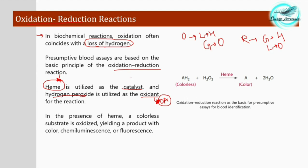Heme acts as a catalyst — a substance that alters the rate of reaction, typically increasing it, without being consumed in the reaction. If a particular stain is blood, heme will be present, and this heme will catalyze the conversion of a colorless substrate into a colored product after oxidation, with the release of water.